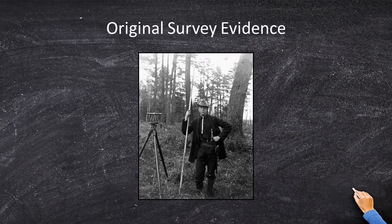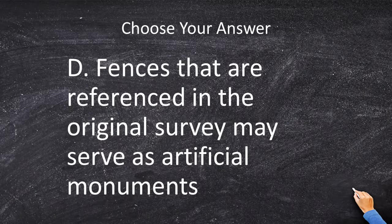So let's find an answer choice that is harmonious with that basic principle. The best choice here is answer choice D. D says: fences that are referenced in the original survey may serve as artificial monuments. Fence lines that are referenced in the original survey may serve as artificial monuments. And if they don't, then it's tough luck.